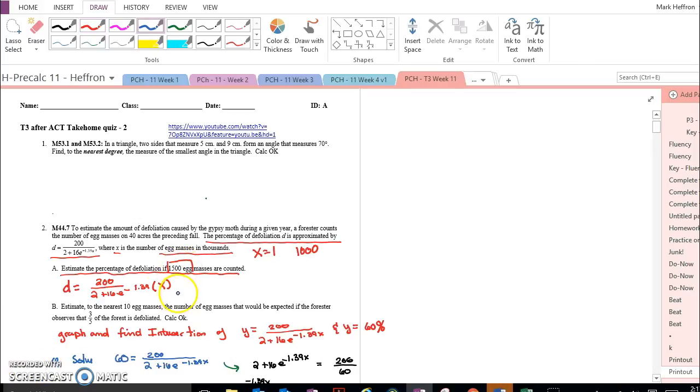So for 1,500 eggs, that would be an X of 1.5. When you plug all this in, you get just over 50%, 50.1%.